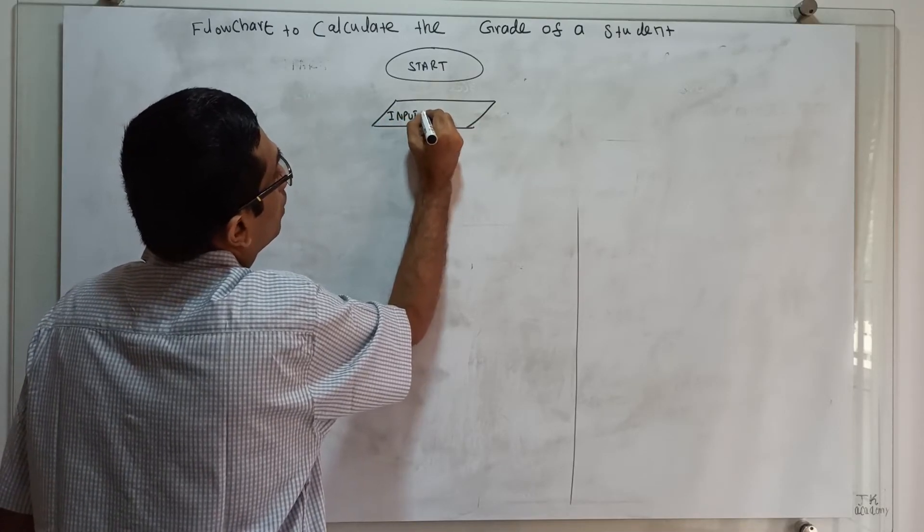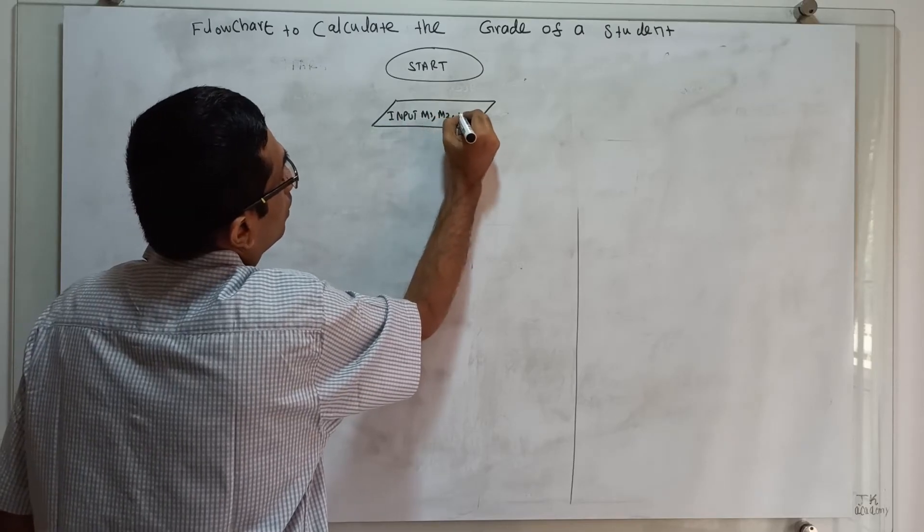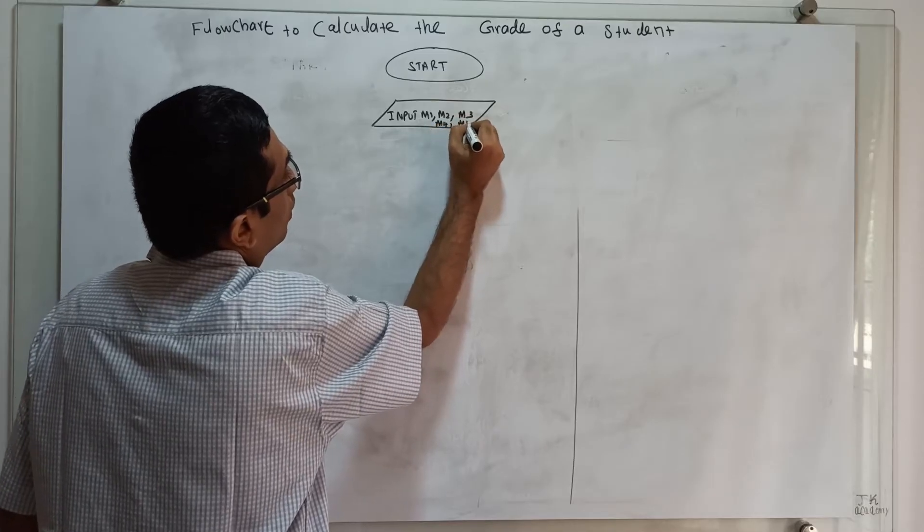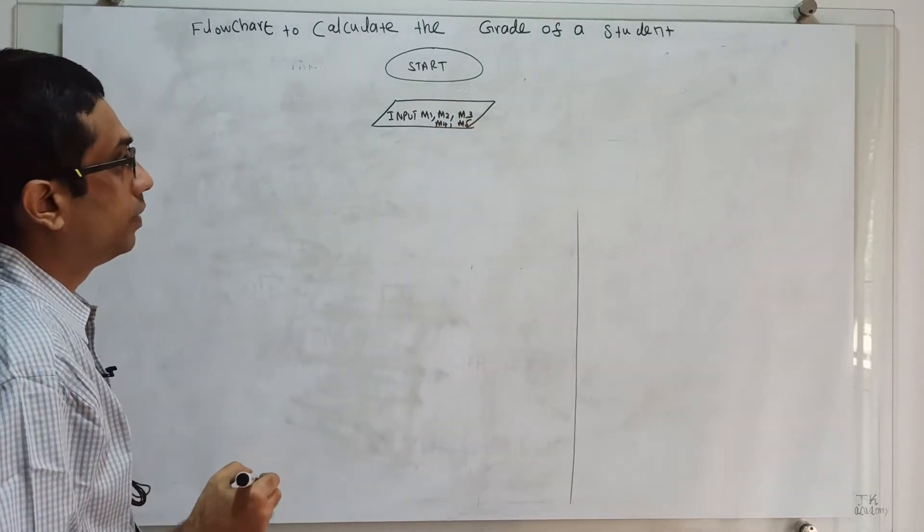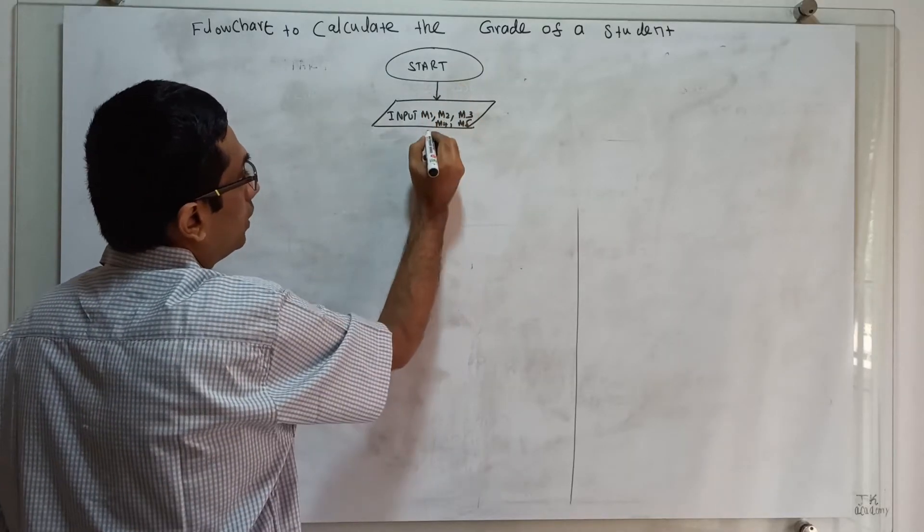Input m1, m2, m3, m4, m5. I have to get an input as five subject marks. Next, I am calculating...